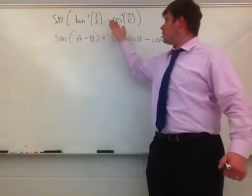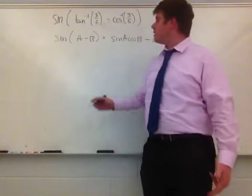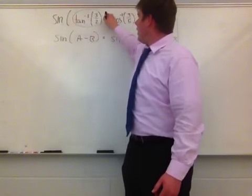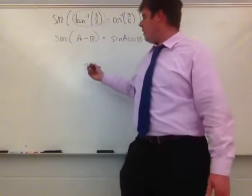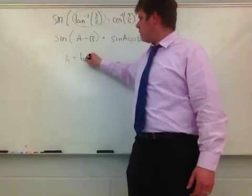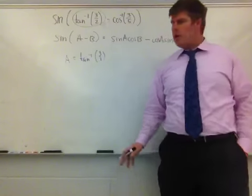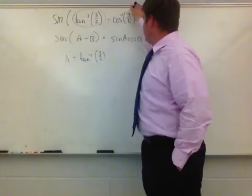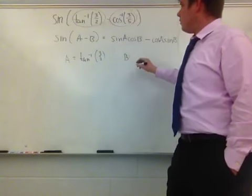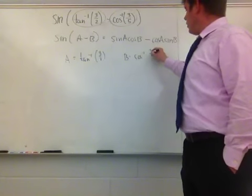Well, some people might say here, I've got tangent, I've got cosine, and I need to take a look at it. Well, what I need to take a look at is that this whole value right here is what A is. So what I'm going to do here is I'm going to say that A is equivalent to the tangent inverse of 3 halves. And I'm going to go over here and say, well, this is what B is. So I'm going to say that B is equivalent to the cosine inverse of 3 halves.